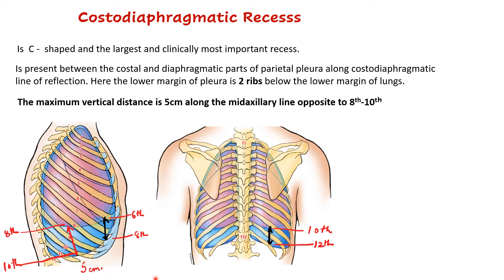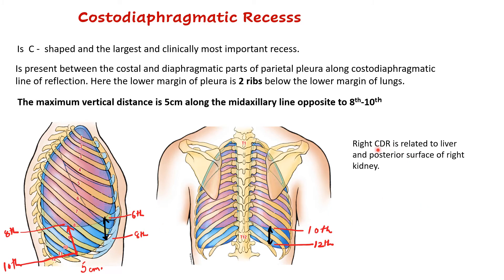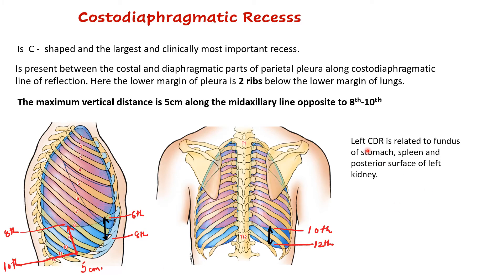The deepest part of this recess — the maximum vertical distance — is 5 cm, present along the mid-axillary line opposite to the 8th to 10th ribs. The right costodiaphragmatic recess is related to the liver and the posterior surface of the right kidney, whereas the left costodiaphragmatic recess is related to the fundus of the stomach, spleen, and posterior surface of the left kidney.